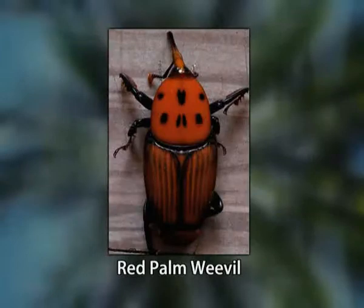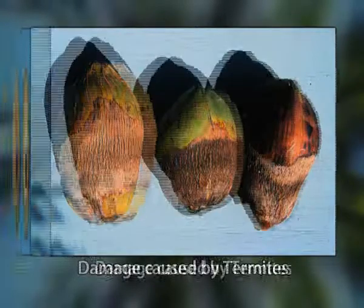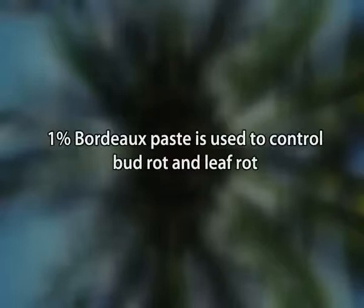Now the pests. The coconut palm is damaged by a number of insect and non-insect pests. The most devastating among them are rhinoceros beetle, red palm weevil, termites and rodents. Now control of pests: spraying with 0.4% wettable sulphur or with neem-based pesticides can give some relief against mites. 1% Bordeaux paste is used to control bud rot and leaf rot.